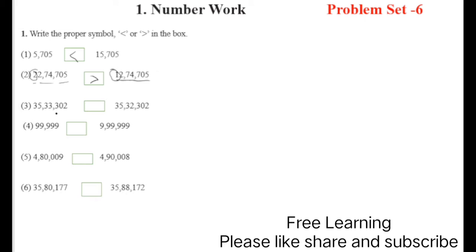Next, question number three: count the digits — there are seven digits — so we check the first digit: same; second digit: also same; third: also same; and in the fourth position, this one is bigger and this one is smaller. So we write this is the bigger number. Then count digits: five here and six there, so directly we can write the answer. Next, count the digits: six and six. The first number is the same, but the second digit here is smaller and this is bigger.